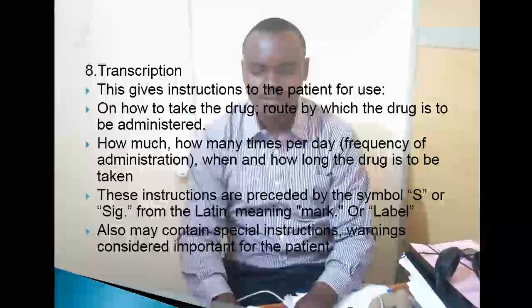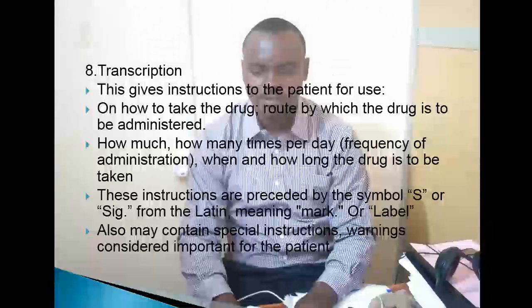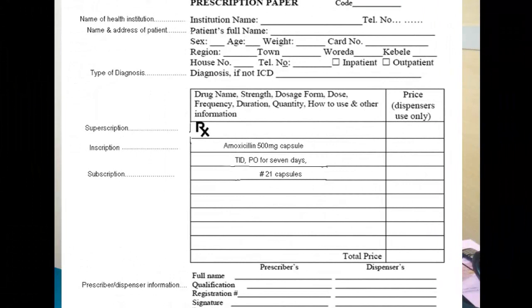Kingine kinaitwa transcription — this gives instructions to the patient. Transcription ni maelekezo yanayopewa mgonjwa ya matumizi ya dawa — how to take the drugs, the route by which the drug is being administered, na muda wake wote wa matumizi. This instruction is preceded by the symbol 'S' or 'SIG' from the Latin meaning 'mark' or 'label.' It may also contain special caution warnings considered important for the patient. Kama inavyoonekana hapo, ndio yale ambayo tumeyasoma na tunaweza kuyabainisha kwenye prescription tunayoitumia kwenye facilities zetu. Asante. Thank you for watching.